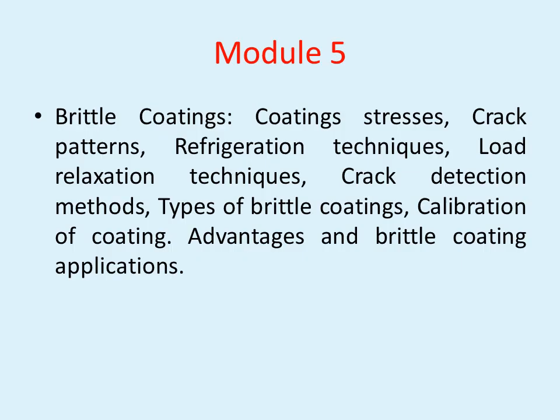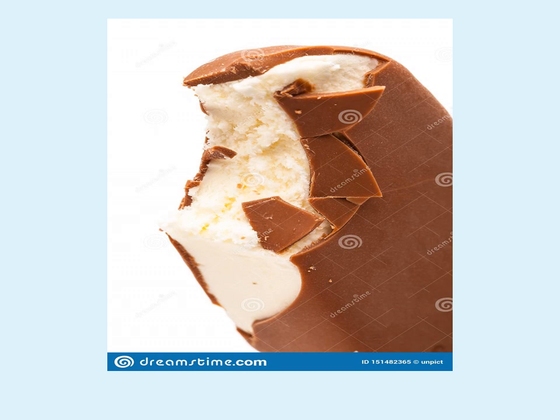This is the syllabus for HSM Mechanical related to brittle coatings which comes under module 5. The real-time example of brittle coating is your chocobar where the layer of brittle chocolate is applied over the ice cream. When you bite the chocobar we can observe that the chocolate layer gets cracked and this type of crack is the brittle crack.